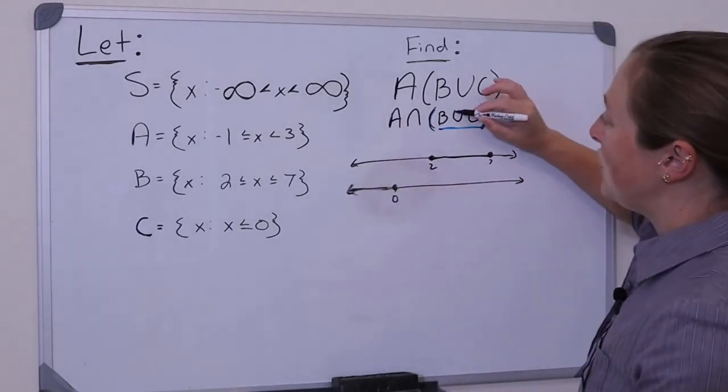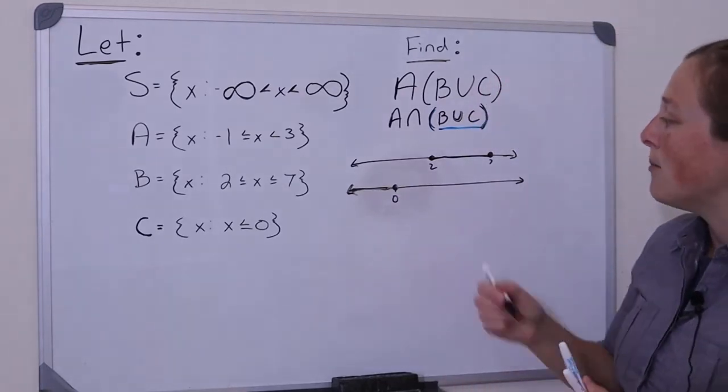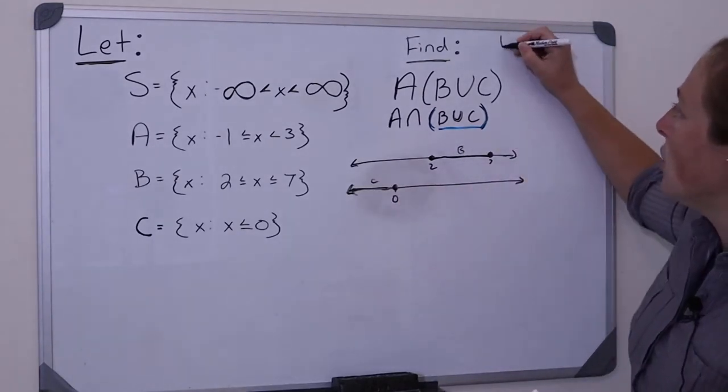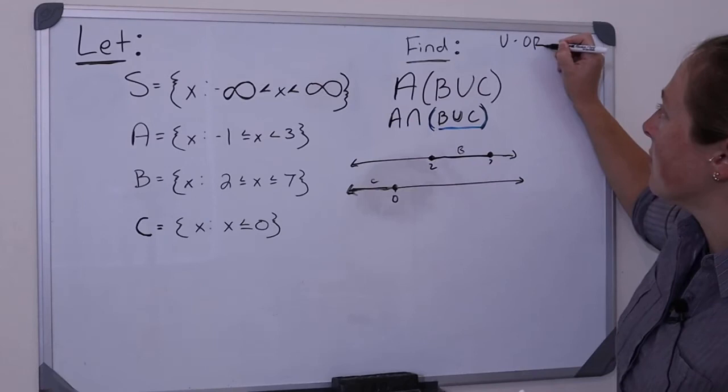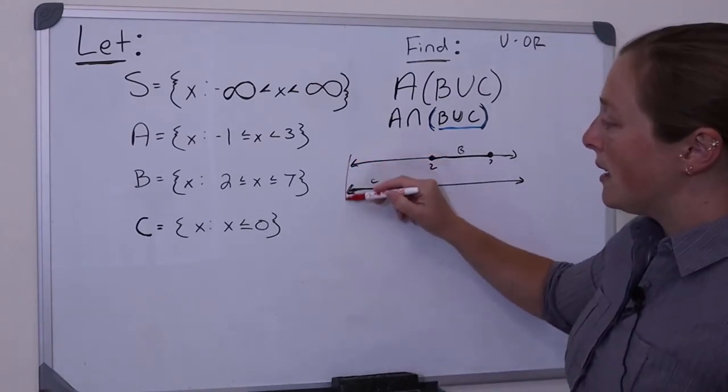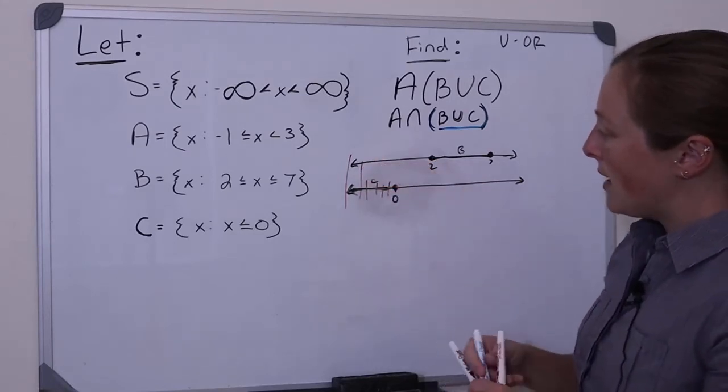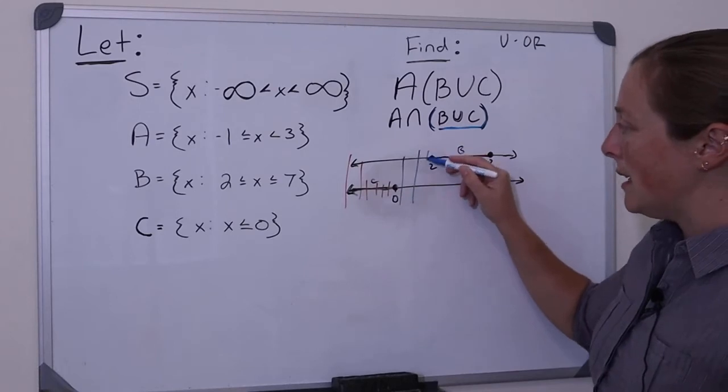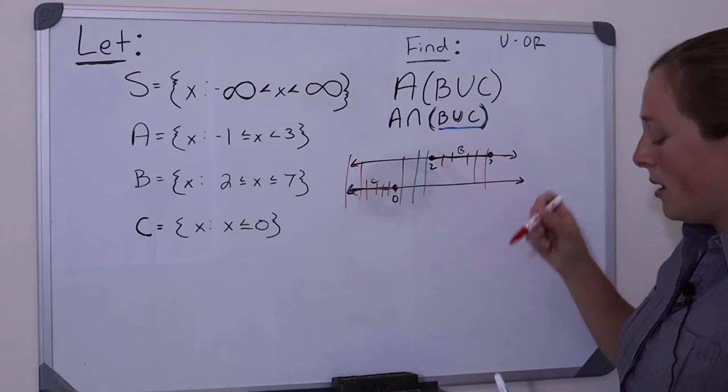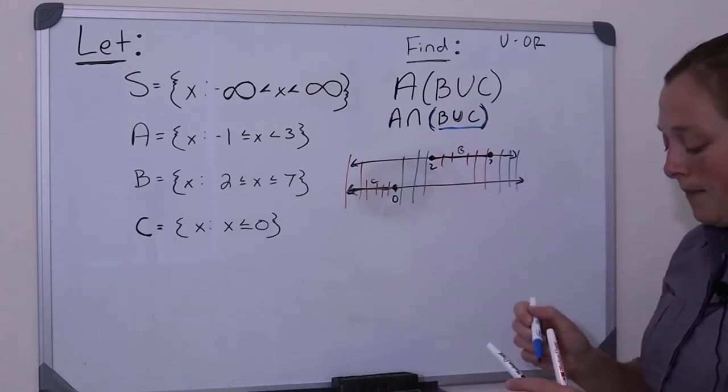Okay, so remember what is union? Union means I'm looking for elements that belong to either B or C. So union is OR. So I'm looking for elements that belong to either B or C. Down here, I belong to C, so I'm good. Right here, I don't belong to B or C, so that's not good. And then here, I belong to B, so I'm good. Until I get to here, then I don't belong to B or C, so I'm not good.